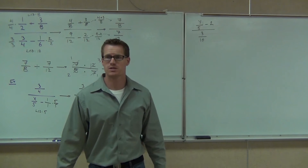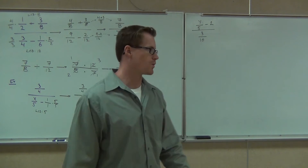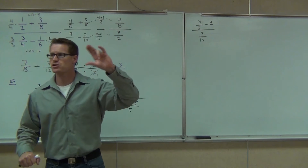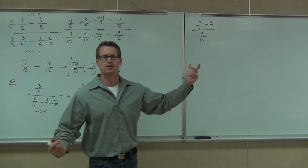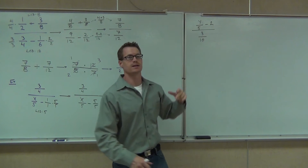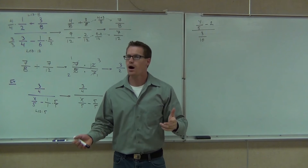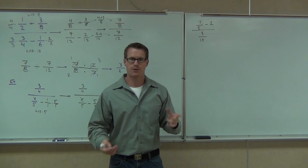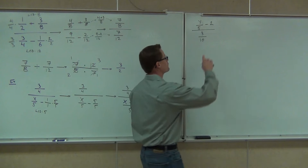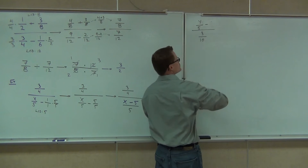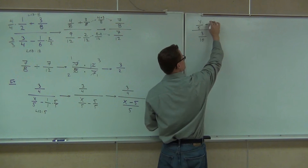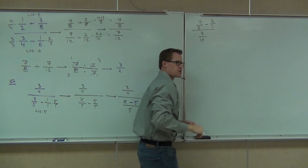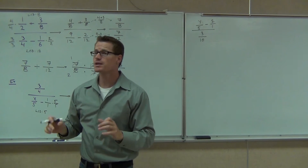Let's bring it back up here and focus on the board. The first thing we need to do is get one fraction over one fraction. We have one fraction in the denominator — that's correct. On the numerator, though, we have two fractions: we've got y over 5, and we consider this to be 2 over 1, in which case we need a common denominator.